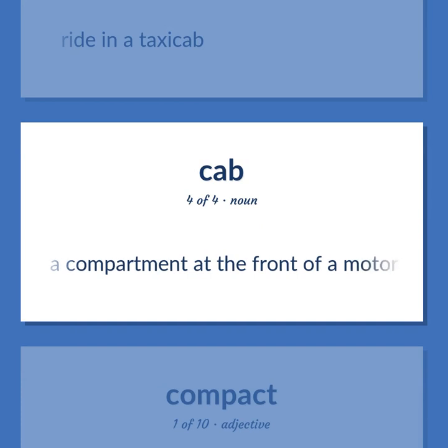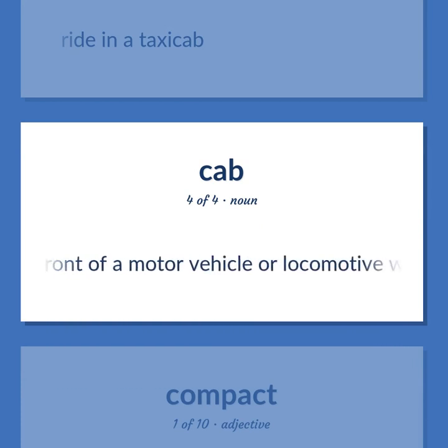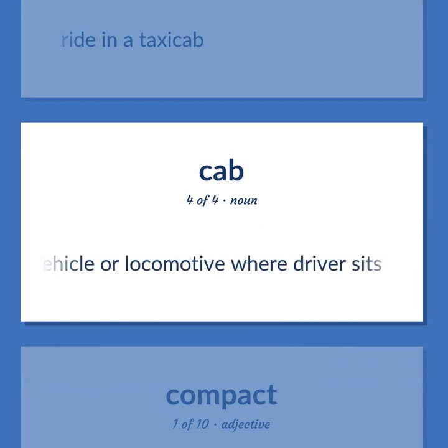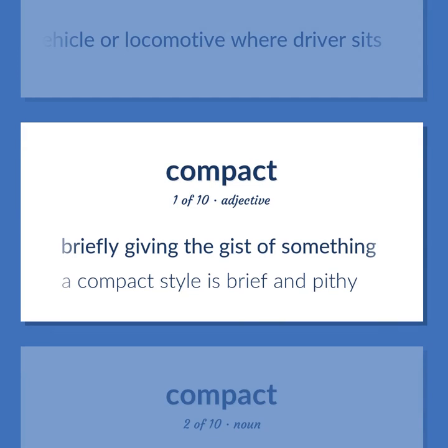CAB: A compartment at the front of a motor vehicle or locomotive where the driver sits. Briefly giving the gist of something — a compact style is brief and pithy.